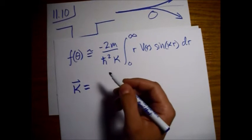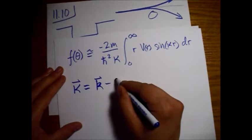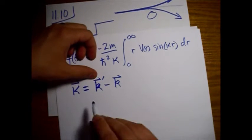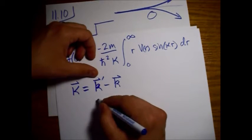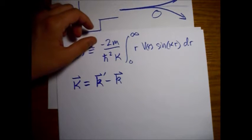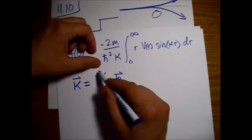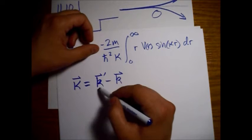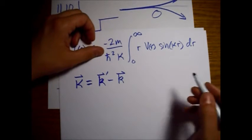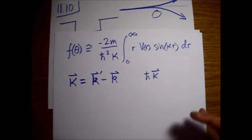Kappa is defined as follows. h-bar k-prime gives the momentum of the incident beam, and h-bar kappa is the momentum transfer to the particle — from the incident beam to the detector.